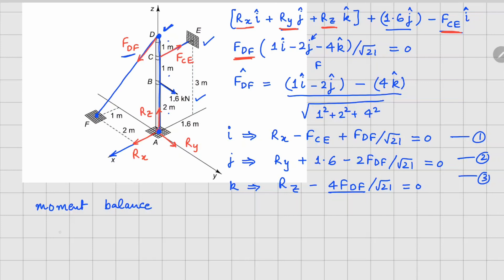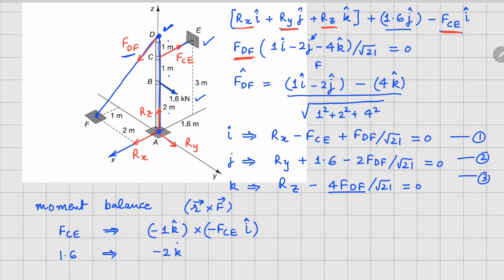For the moment balance using r × F about point D: for F_CE, r = −1 k-cap and force = −F_CE i-cap. For the 1.6 kN force, r = −2 k-cap and force = 1.6 j-cap. For the reactions at A, r = −4 k-cap and force = Rx i-cap plus Ry j-cap plus Rz k-cap.